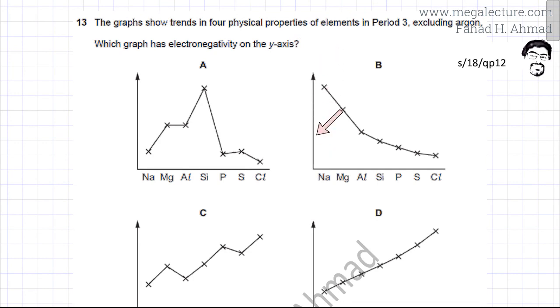So this is the y-axis and this represents the electronegativity of the element. Electronegativity of an element is the tendency for an atom or element to gain electrons. So I am going to open the periodic table.